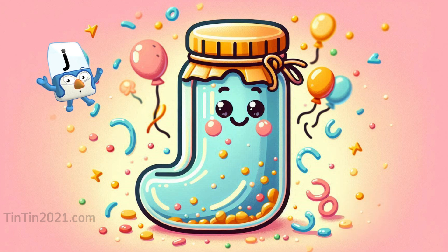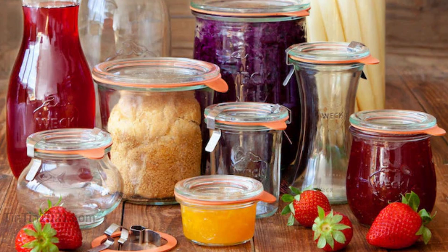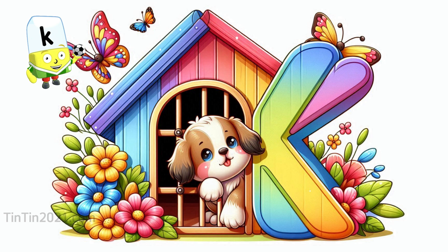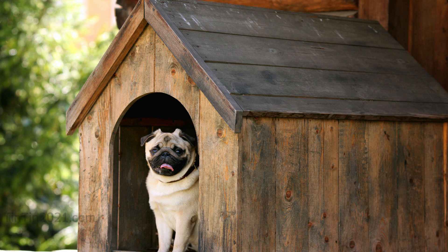The letter J is for jar. The letter K is for Gano.